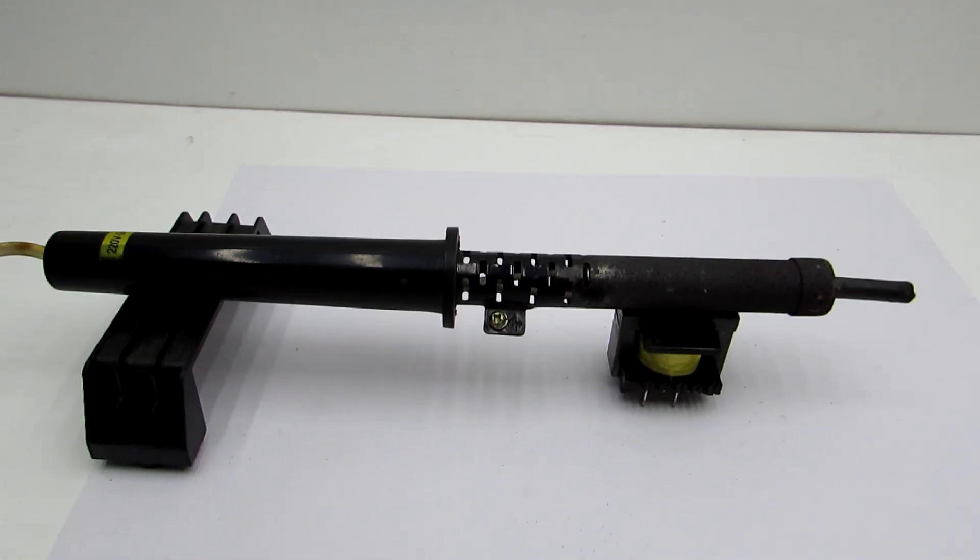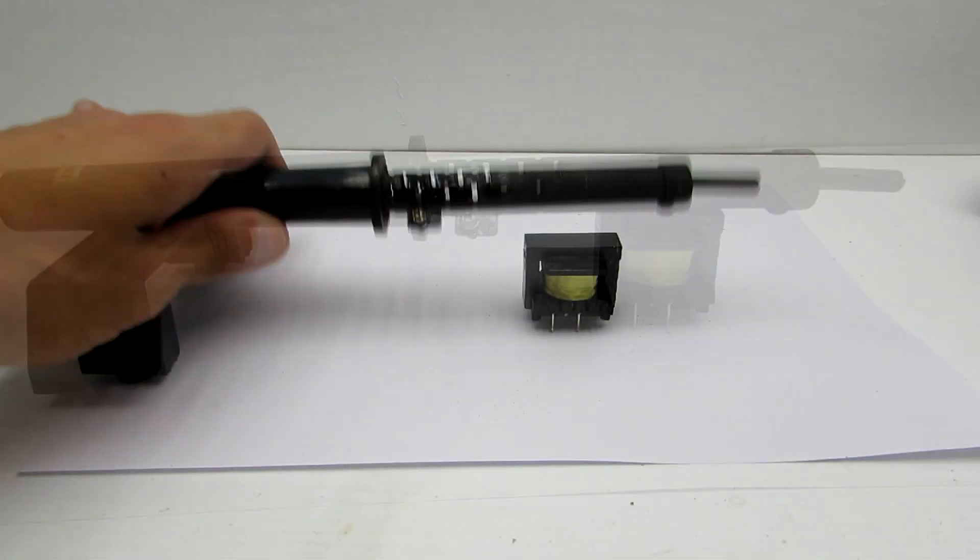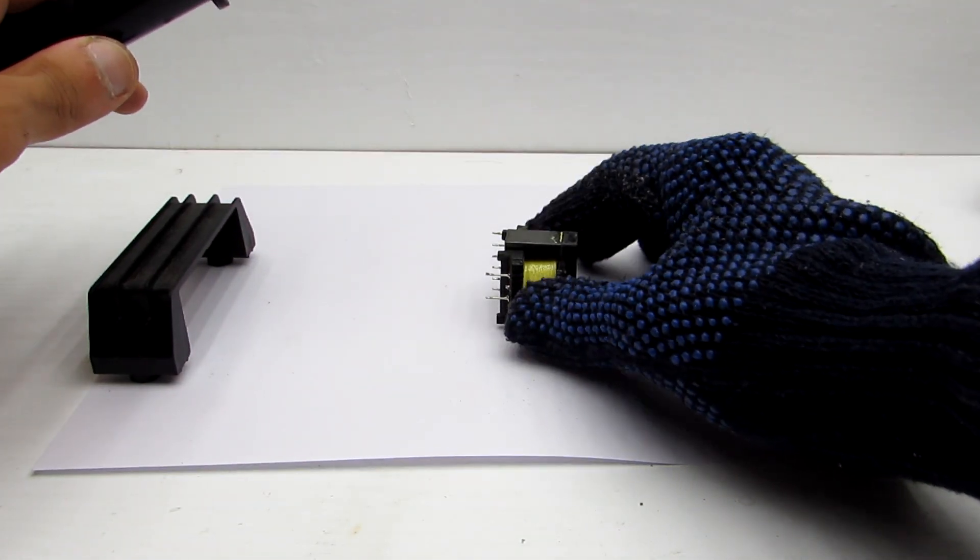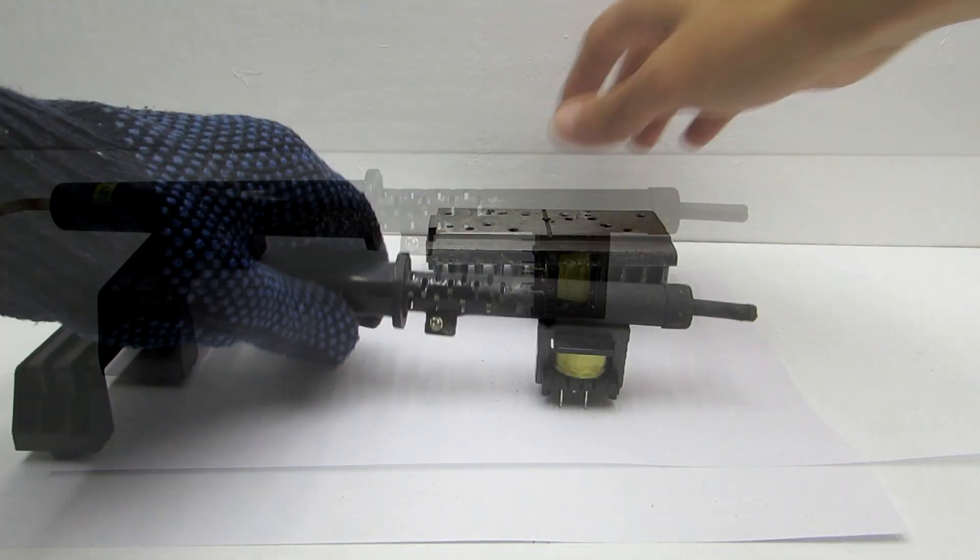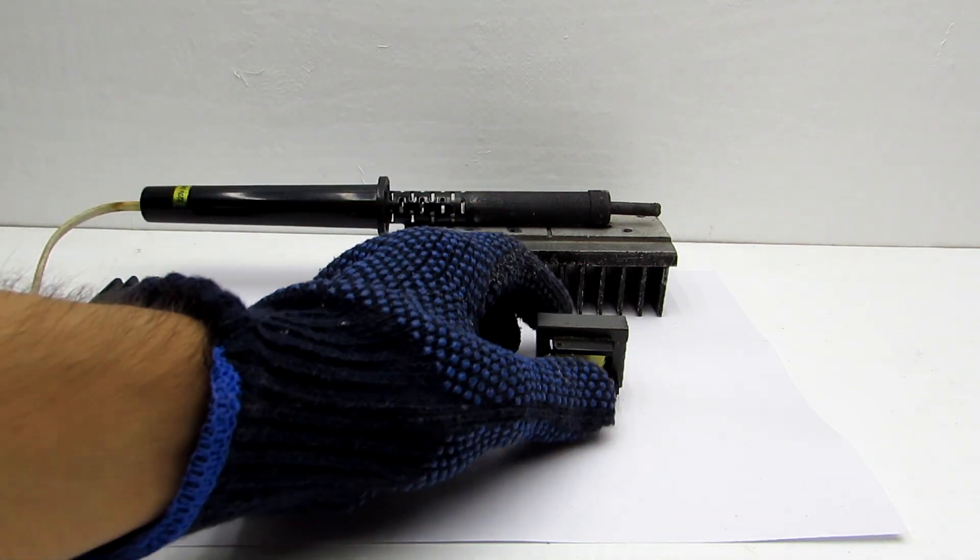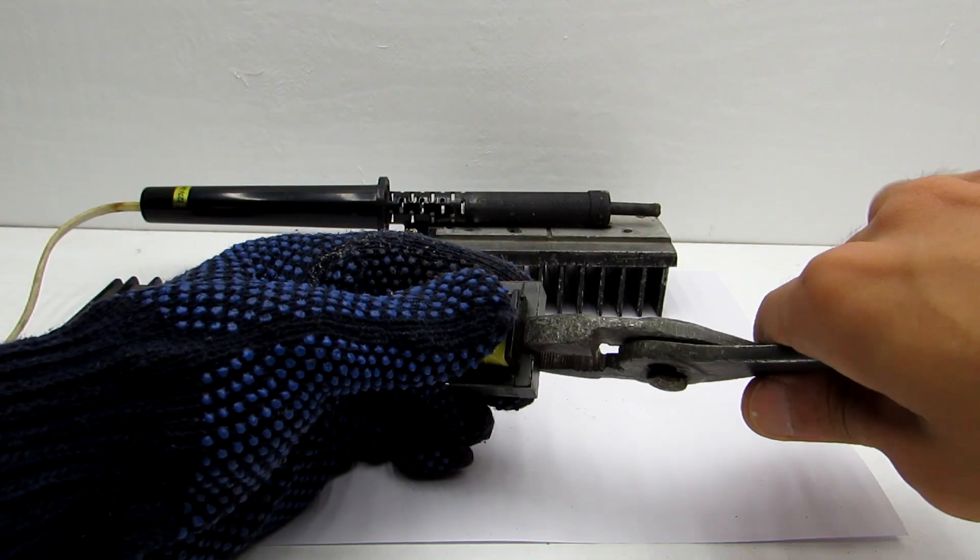After 10 to 15 minutes, warm up the other side. Then try to disconnect the halves. If the glue is still not weak, it is necessary to continue heating. Do not use much force, otherwise the core could break.